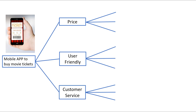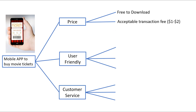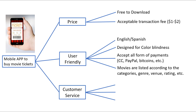These are what the customer cares about and will use them to judge the quality of the app. Next, the company team will elaborate more on each quality driver to come up with performance requirements. For price, the company can provide the app at no cost and only charge $1 to $2 per transaction. To have a user-friendly app, the designers can give a choice to the user to select between English and Spanish. The app can be designed so that colorblind people can navigate through it with no issue. The app will also support all types of payments, and movies are listed according to categories such as genre, venue, and rating. The same analysis is done for every single quality driver.